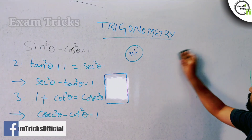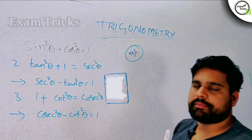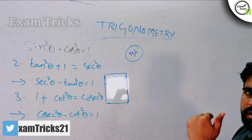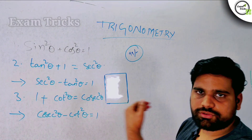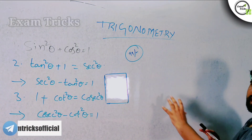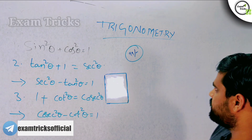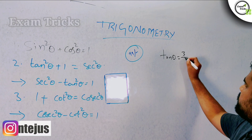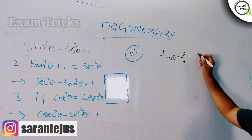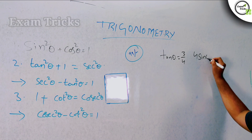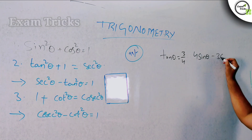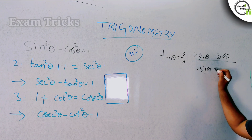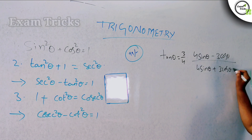Trigonometric ratio problems will come as sums. So let's try the first sum. The question is: tanθ is equal to 3 by 4. And you are asked to find 4sinθ minus 3cosθ by 4sinθ plus 3cosθ.